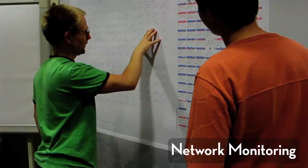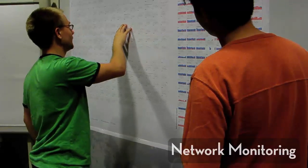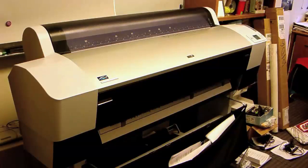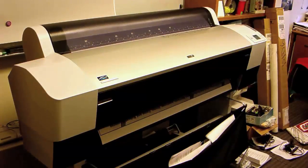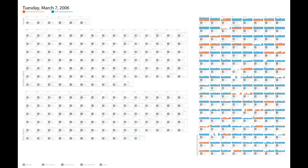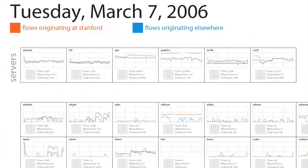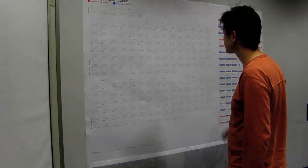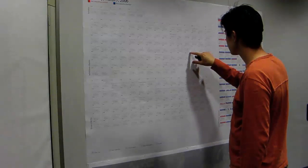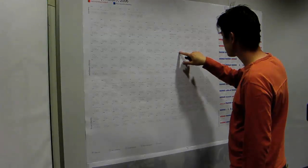Large printed displays provide rich visual context for graphics-heavy applications. This visual context aids in search and comparison tasks. Our first application supports the task of monitoring the health of a large computer network. Each morning, a visualization summarizing the prior day's traffic is printed. Over half a million data points are visualized on the 3 foot by 6 foot display. Yet due to paper's high resolution, all data is immediately accessible without feeling cluttered, enabling the user to perform search and comparison tasks naturally — no zooming or information hiding is necessary.